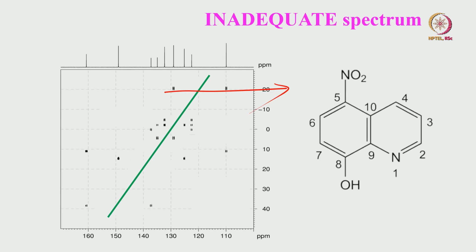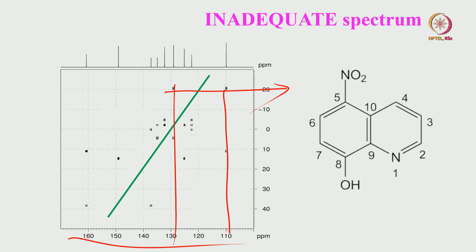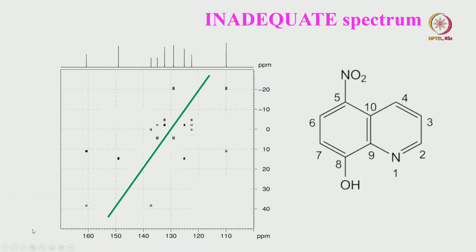In the F1 dimension you have the sum of the chemical shifts. In the detection dimension, come vertically down and you will get only the corresponding single quantum chemical shifts. So we will quickly go through this molecule. In the proton spectrum we have already assigned H7, and carbon 7 is confirmed from HSQC as well. If you carefully see, each of them is a doublet because they are all an AX spin system - two carbons coupled together form an AX spin system.